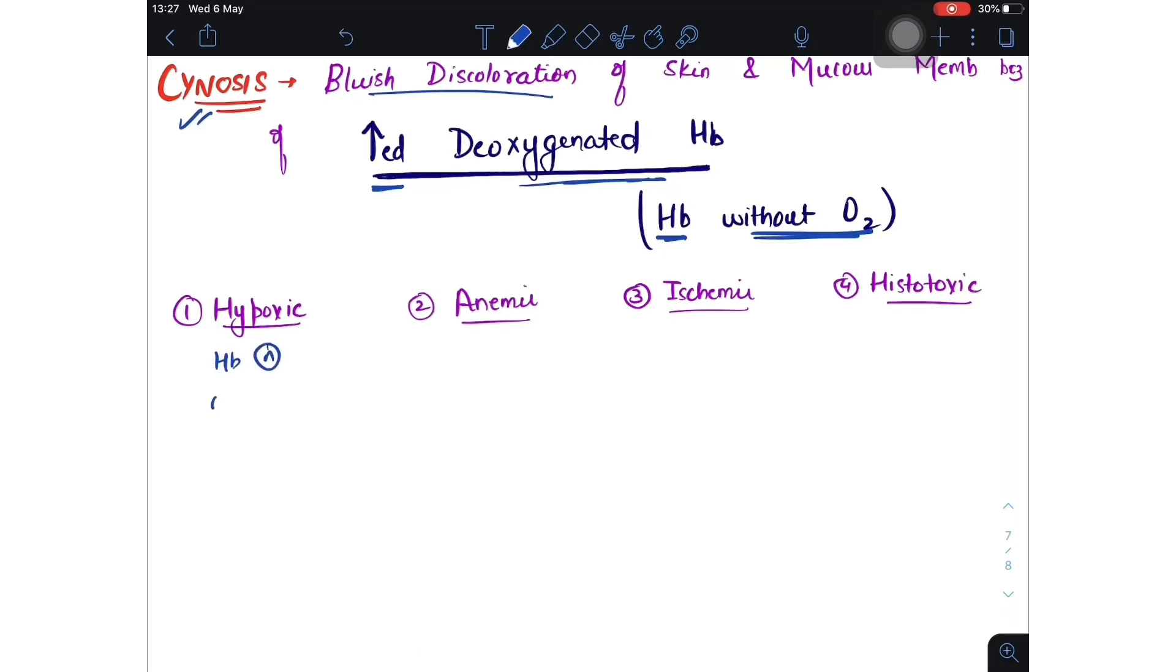So in hypoxic hypoxia, hemoglobin is normal but O2 is decreased, so it satisfies this definition, so cyanosis is present. In case of anemic, hemoglobin is absent and O2 is normal. For having cyanosis, hemoglobin should be there so that it can be without O2. Here hemoglobin is not here, so we cannot see cyanosis in anemic.